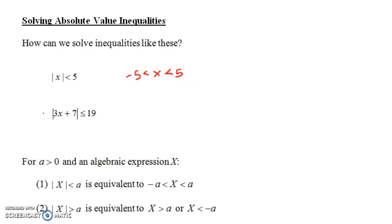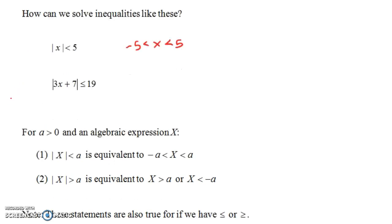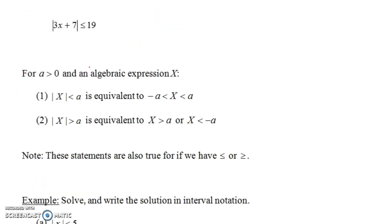Now this second one is a little bit trickier: the absolute value of 3x plus 7 is less than or equal to 19. How do we solve that for x? Here's a key fact: for any positive number a and any algebraic expression x, to say that the absolute value of x is less than a is equivalent to saying that x is between minus a and a — that is, negative a is less than x is less than a. Notice we get an 'and' type of compound inequality.